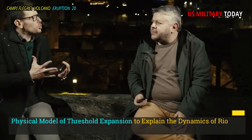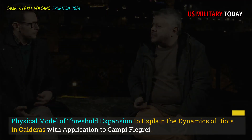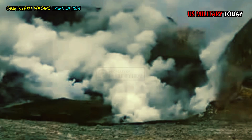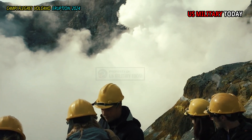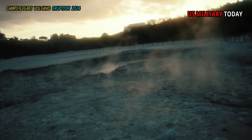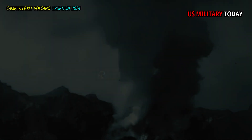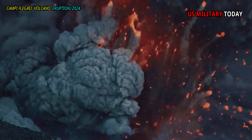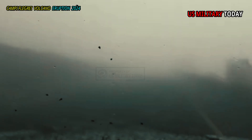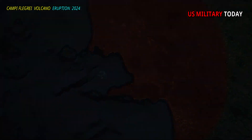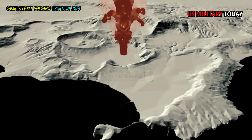Physical model of threshold expansion to explain the dynamics of unrest in calderas, with application to Campi Flegrei. Many calderas exhibit extraordinary fluctuations which often do not result in eruptions. When unrest occurs, a vent opening process occurs which leads to an eruption. In calderas, vent sites are usually spread over a large area and form monogenic cones, resulting in a wide distribution of eruptive vents, making future vent locations difficult to predict.